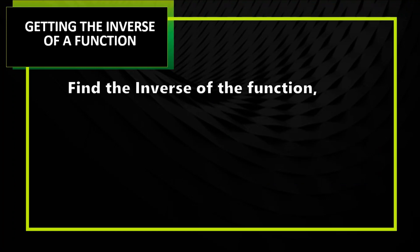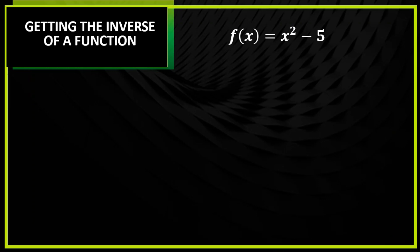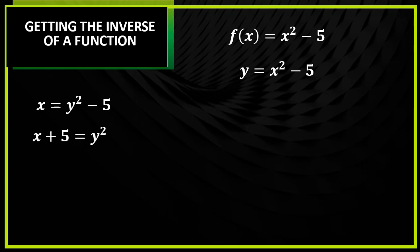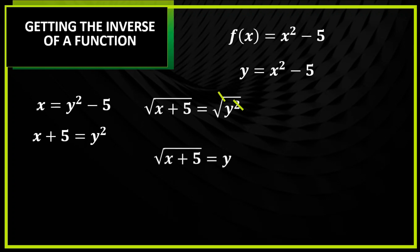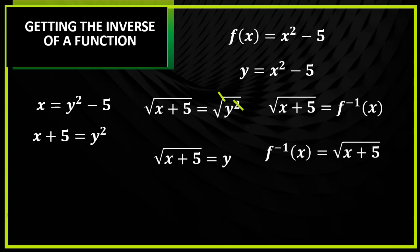Find the inverse of the function f of x is equal to x squared minus 5. Change f of x to y, then interchange x and y. Solve for y — transpose yung negative 5 para ma-isolate. Since meron pa rin tayong squared, we need to find the square root — cancel the square root and the squared, and then that will be y equals square root of x plus 5. Change y to f⁻¹ of x, and this will be the answer for the inverse.